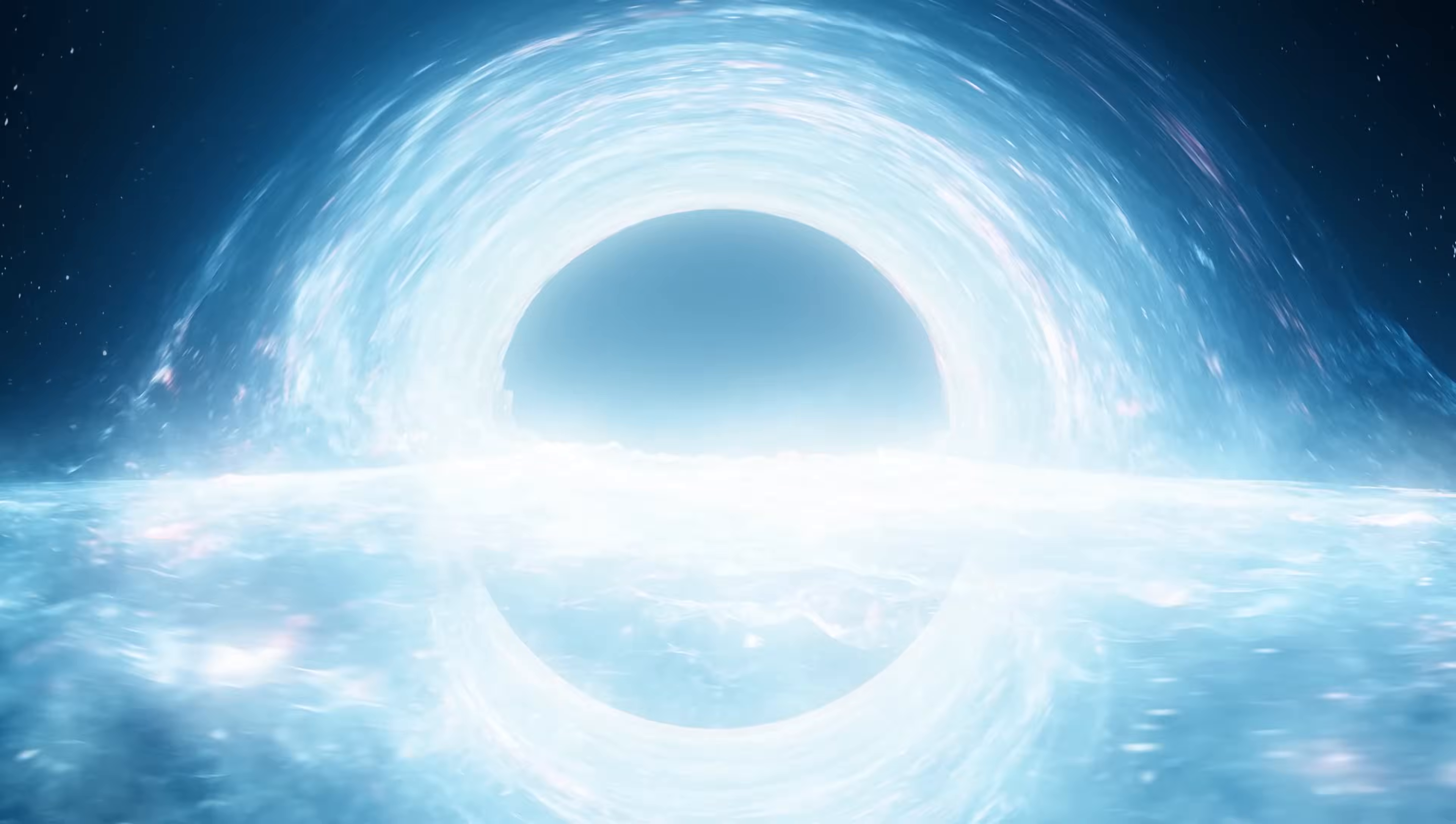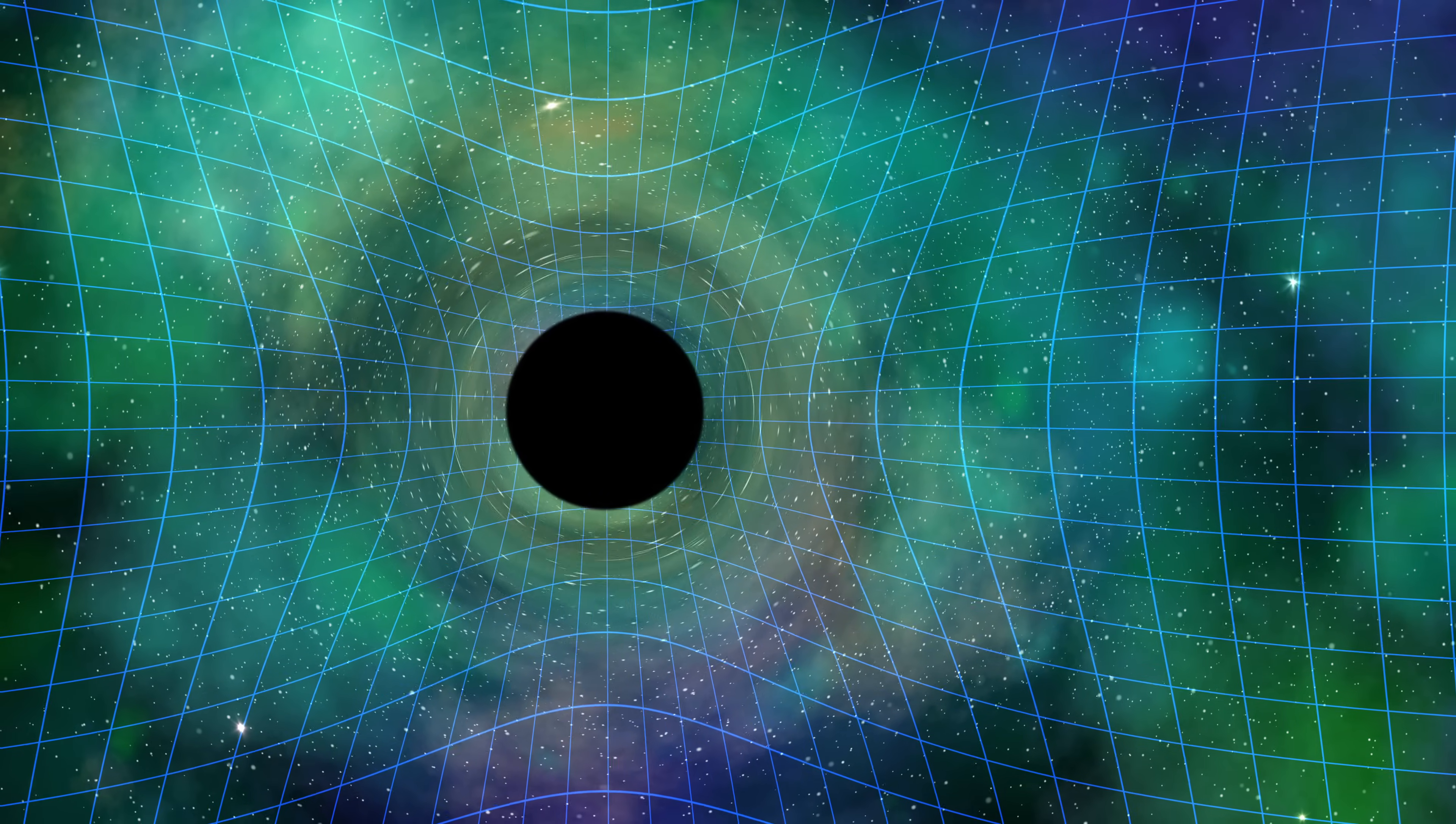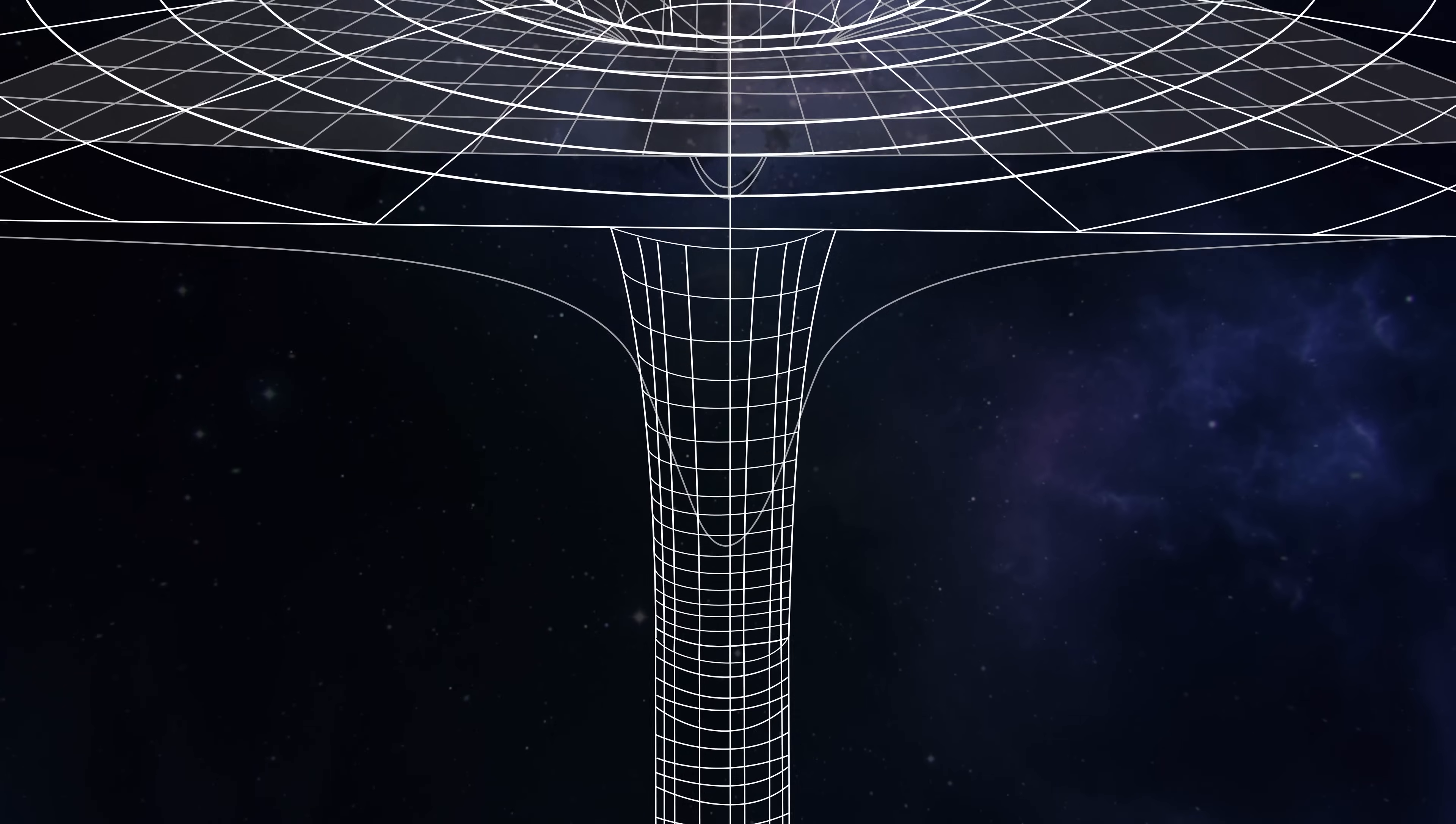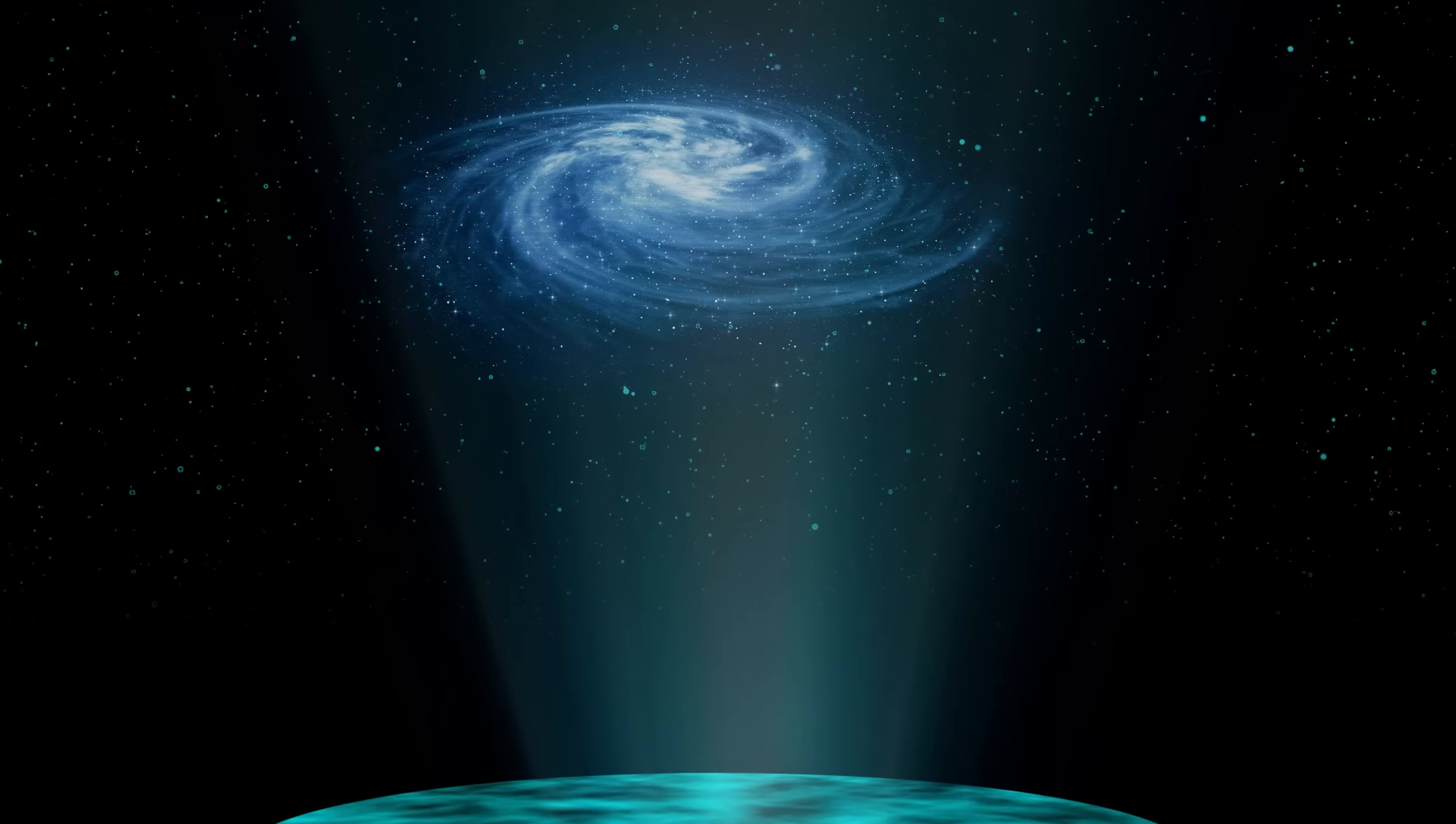The entropy of a black hole, as proposed by Bekenstein, is directly proportional to its surface area, not its volume, a concept that contradicts our everyday understanding of physical laws. This relationship between surface area and entropy leads us to a profound conclusion. The maximum amount of information that can be contained in any given region of space is determined not by its volume, as one might intuitively assume, but by its surface area. This view laid the foundation for the holographic principle, which assumes that all the information of a volume can in principle be encoded on a two-dimensional surface.